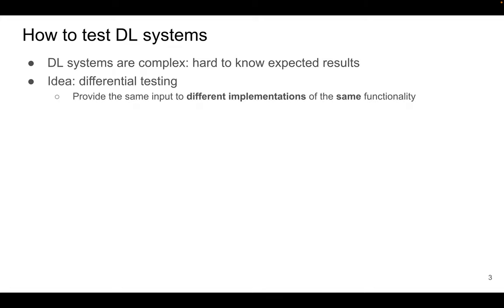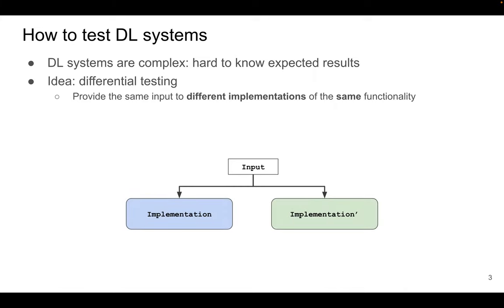Recent researchers have focused on using differential testing to solve this challenge. The idea is to provide the same input to different implementations of the same functionality. More specifically, given a bunch of inputs, we feed them to two different implementations of the same functionality, and eventually we compare the outputs to check whether there are inconsistencies. Here, inconsistencies represent potential bugs in the implementations.